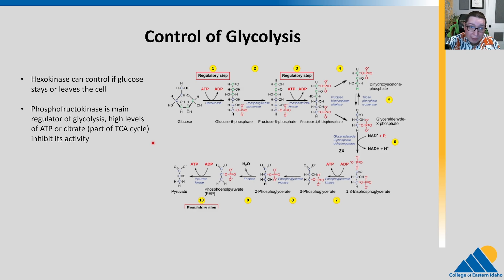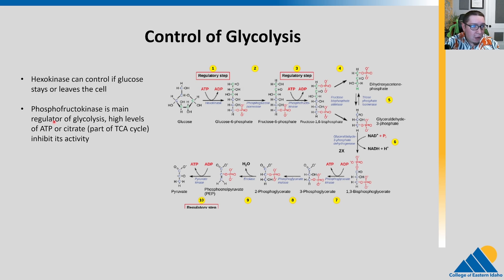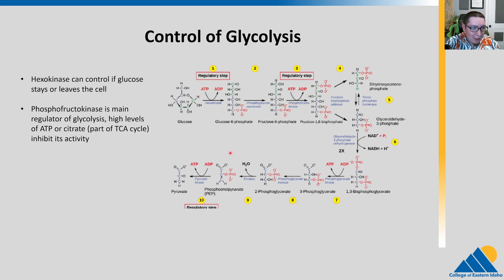There's also control at the level of glycolysis. What I want you to take away from this is not the specifics, but realizing how control usually happens at the level of enzymes and that it is sensing different signals. Hexokinase, the first enzyme in glycolysis, is a key regulatory step — it can control whether glucose stays in the cell or leaves. We also have regulatory steps at step three, enzyme phosphofructokinase, and at step ten, pyruvate kinase.